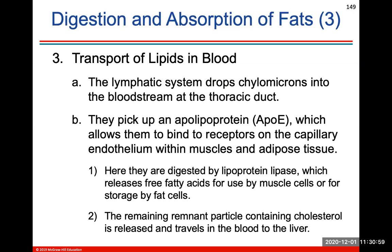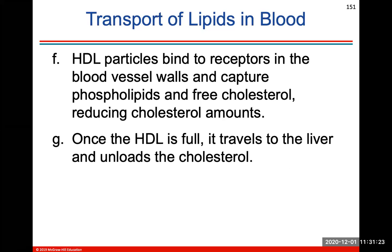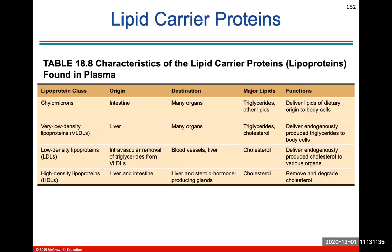The lymphatic system drops these chylomicron fat droplets into the bloodstream at the thoracic duct — that's how we get lipids into the blood. They can be HDL, LDL, or very low density lipoproteins. Low density lipoproteins and high density lipoproteins are different types of cholesterol. HDL particles bind to receptors in blood vessel walls and capture phospholipids and free cholesterol, reducing cholesterol amounts. Once HDL is full, it travels to the liver and unloads the cholesterol. Here's the lipoprotein class, origin, destination, major lipids, and function of each.